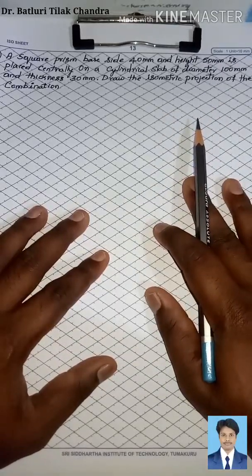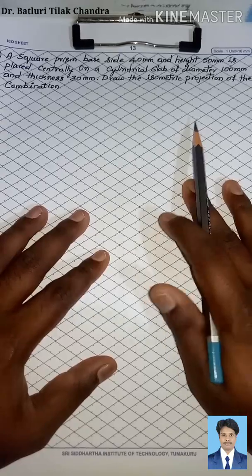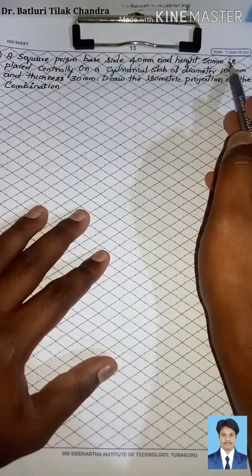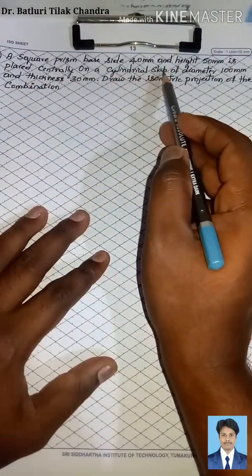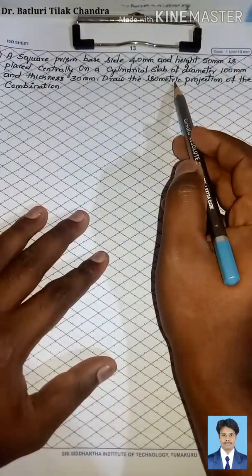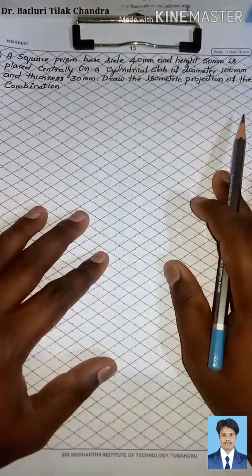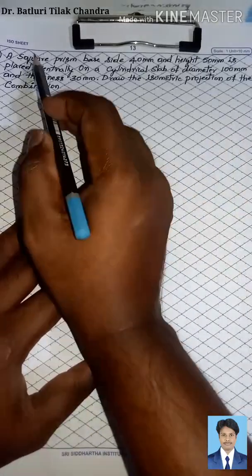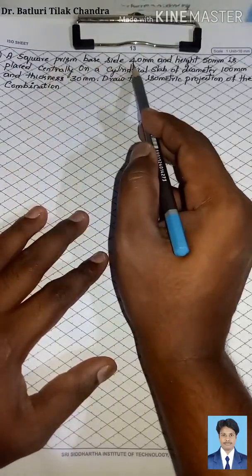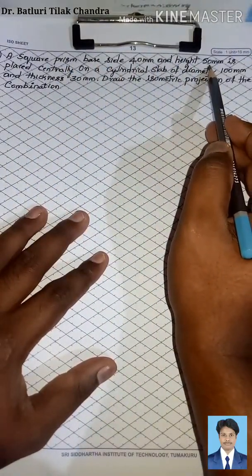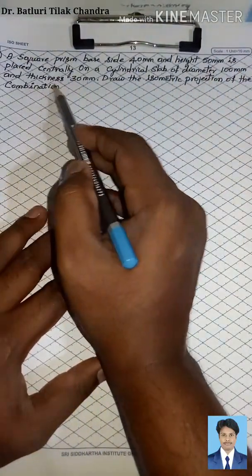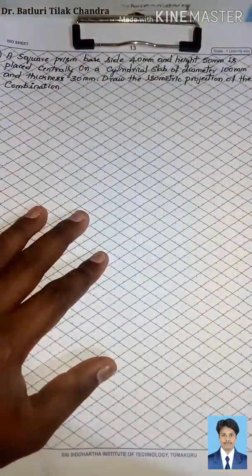Hello friends, today we will discuss the fifth problem in isometric projection. A square prism with base side 40 mm and height 50 mm is placed centrally on a cylindrical slab of diameter 100 mm and thickness 30 mm. Draw the isometric projection of the combination. The combination of solids given is: one is square prism, another one is cylindrical slab.